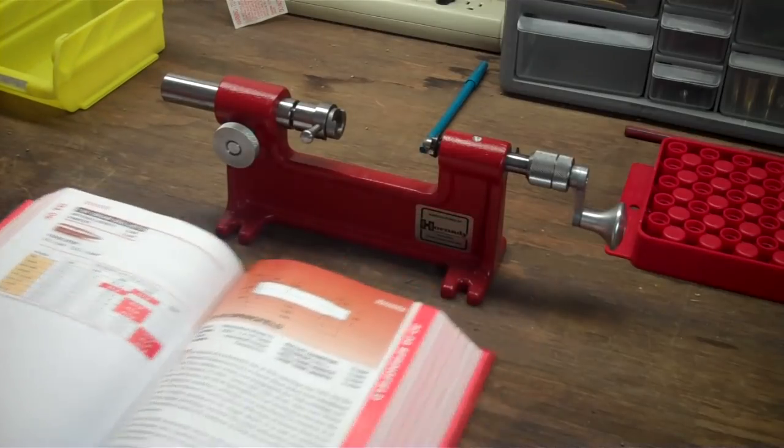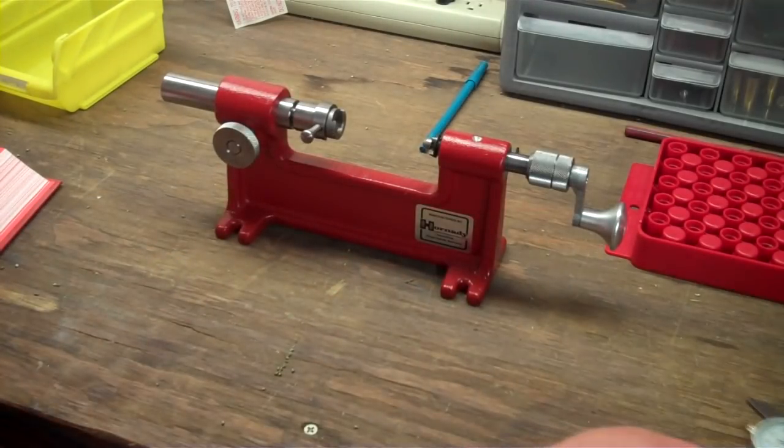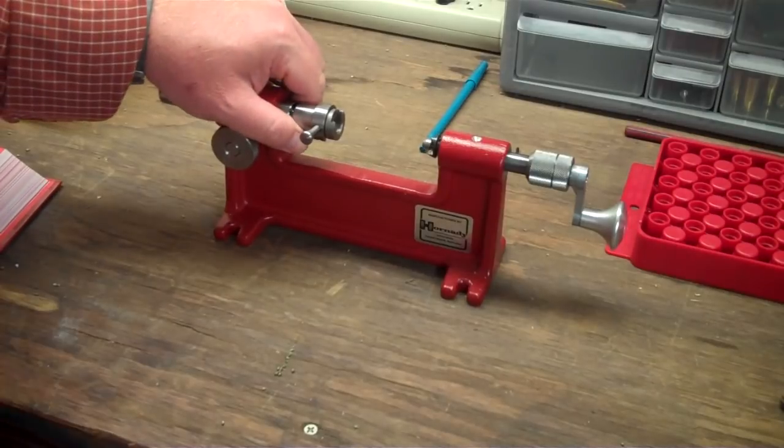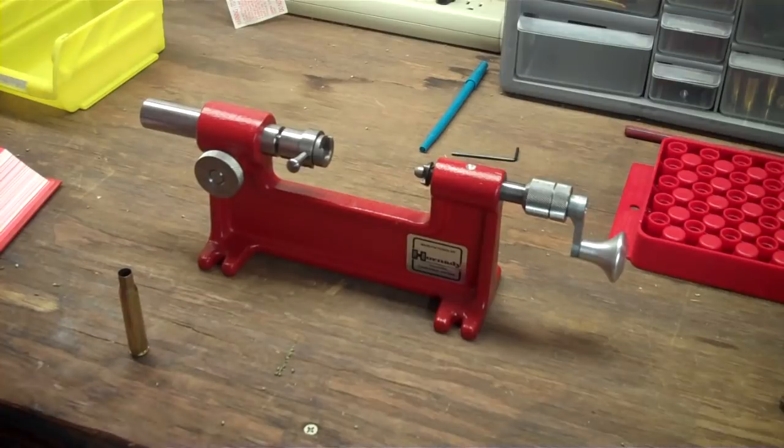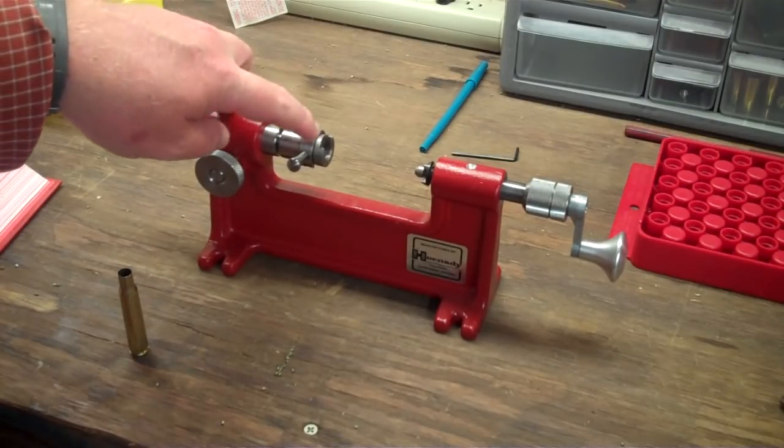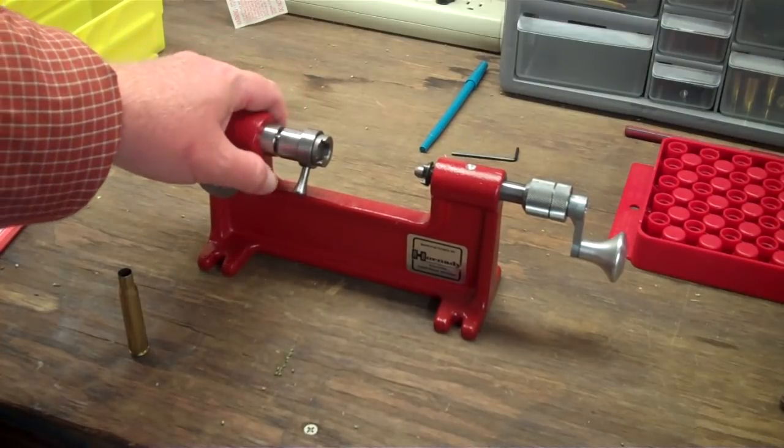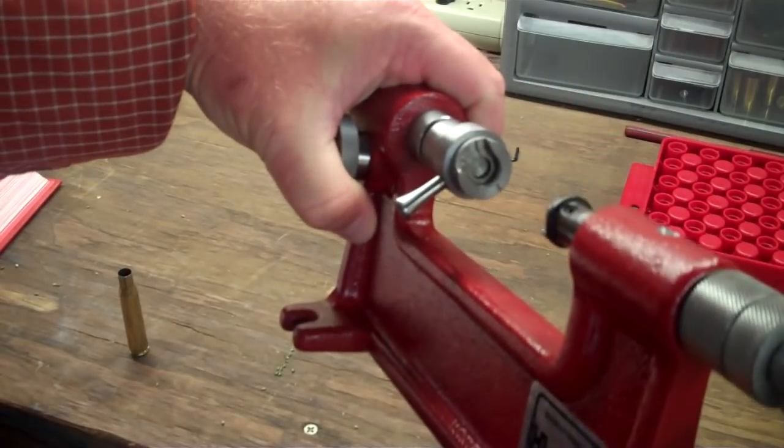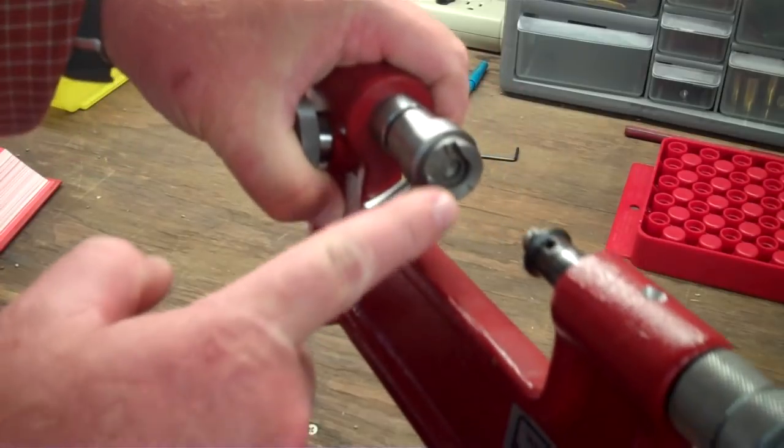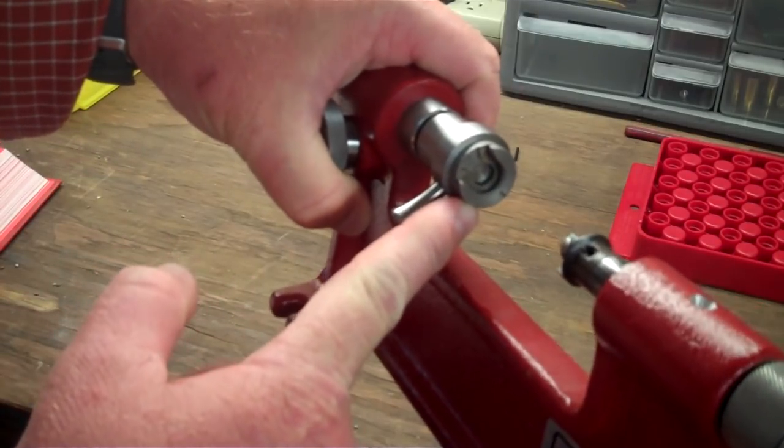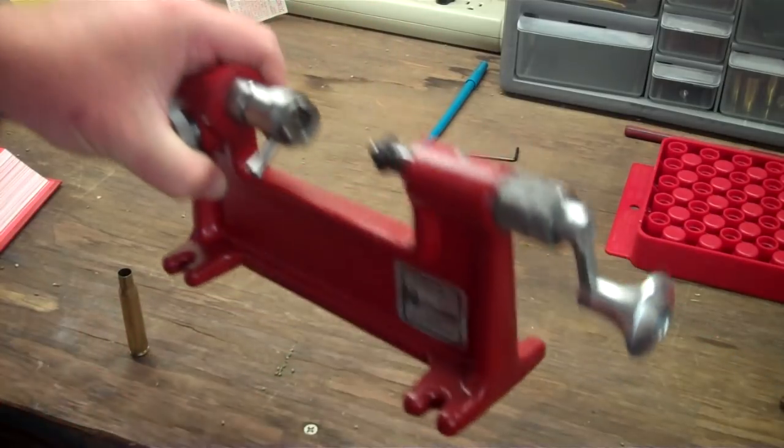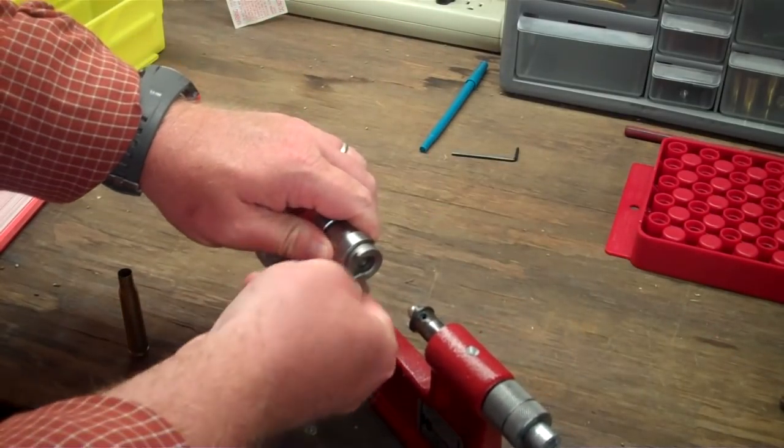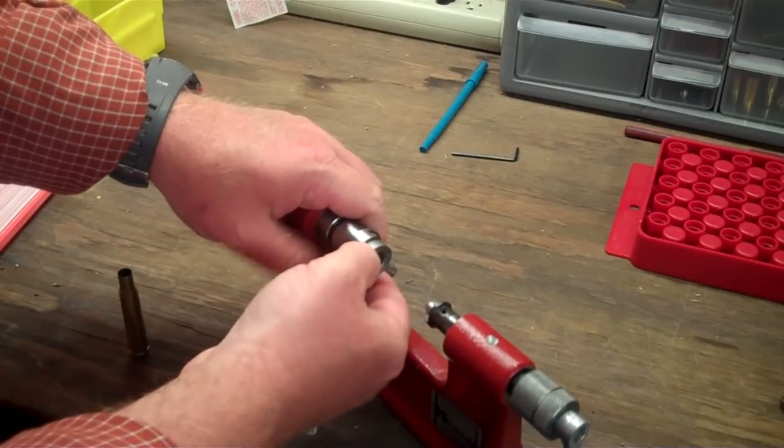That takes us over to the actual Hornady case trimmer and how we use that case trimmer. A couple of different things that you have to know or have to do in order to use this case trimmer. Number one, you have to use a Hornady-branded shell plate. This is the shell plate right here, the same one that I use in my press, and I've taken it off and put it into the case trimmer.